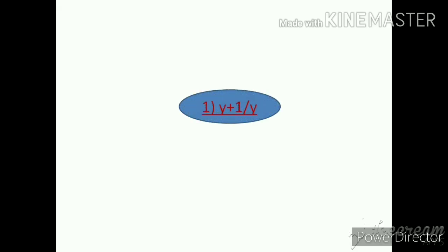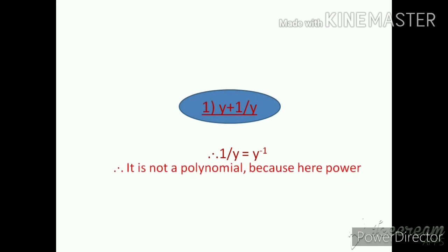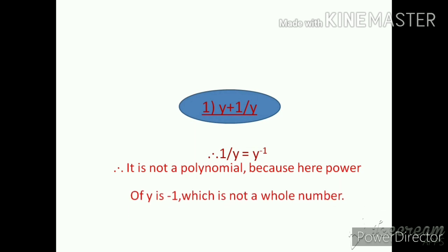Question 1: y + 1/y. The y is in the denominator place. If we take it to the numerator, the index becomes negative — 1/y equals y⁻¹. Therefore it is not a polynomial, because the power of y is minus 1, which is not a whole number.